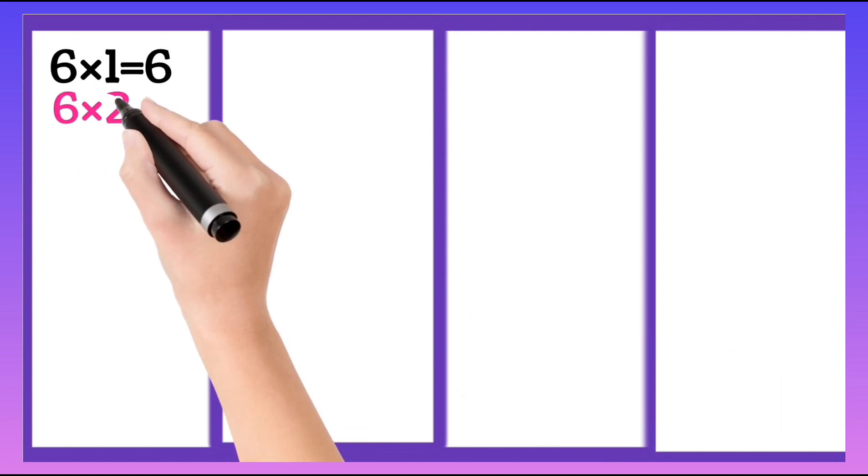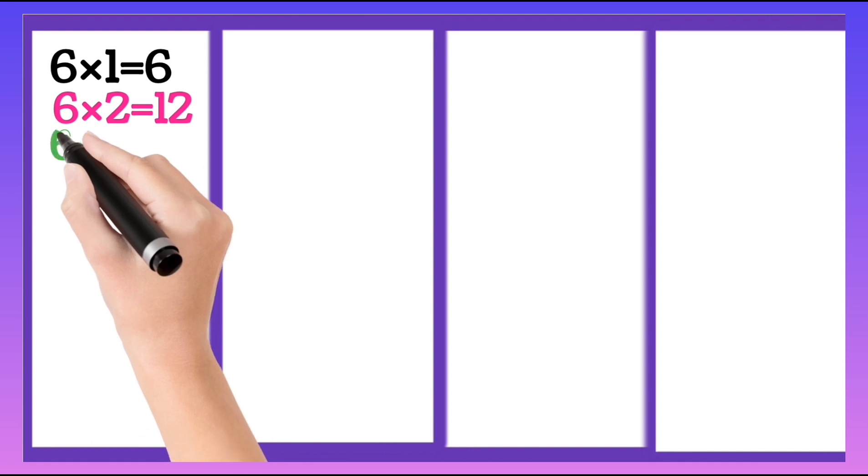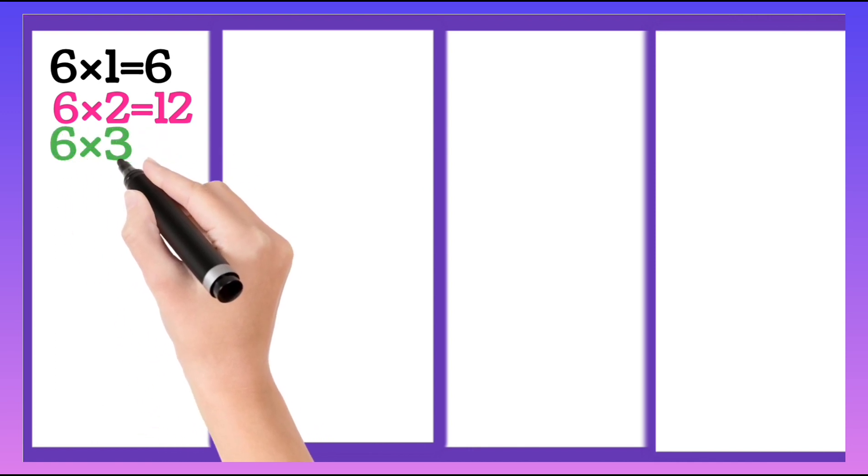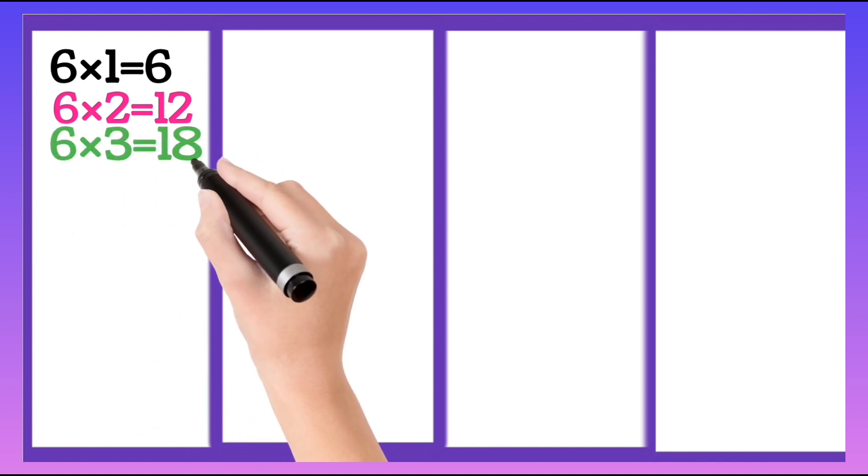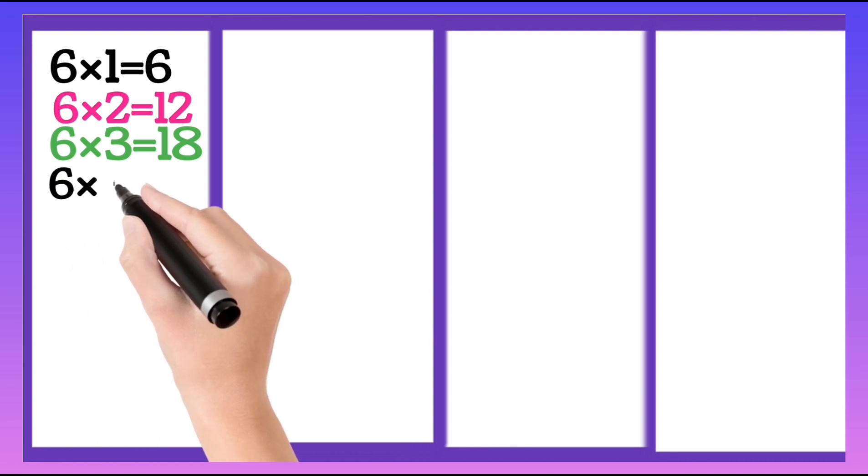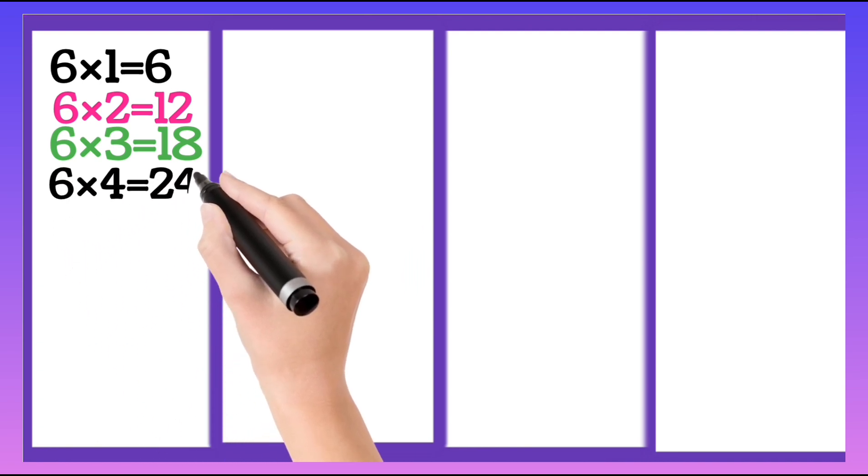6 ones are 6, 6 twos are 12, 6 threes are 18, 6 fours are 24.